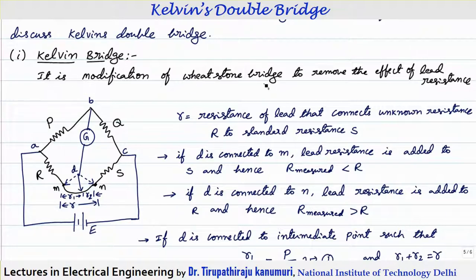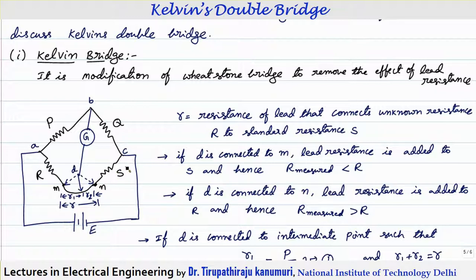The Kelvin bridge is a modification of the Wheatstone bridge to remove the effect of lead resistance. For example, P and Q are the branches on the top and lower sides. R is the unknown value of resistance (a low resistance) and S is the standard resistance. The unknown resistance R is measured in terms of standard resistance S. To connect these two resistances, we use connecting leads, which introduce error in the measurement.